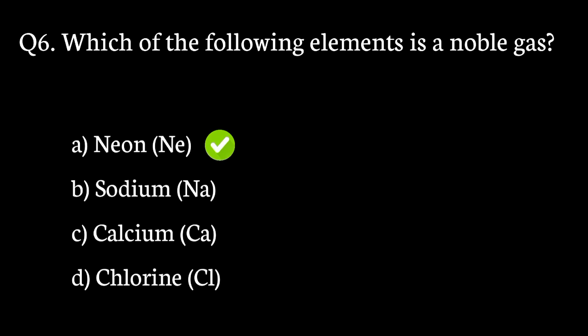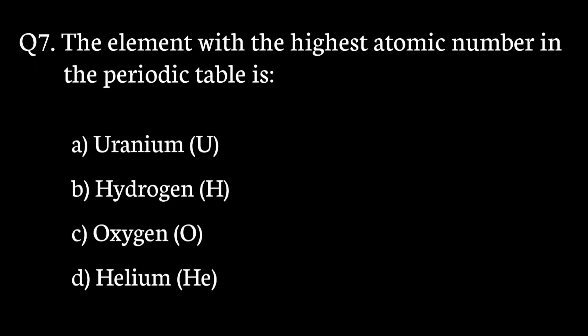Question number 7. The element with the highest atomic number in the periodic table is? The correct answer to that question is option A. Uranium.